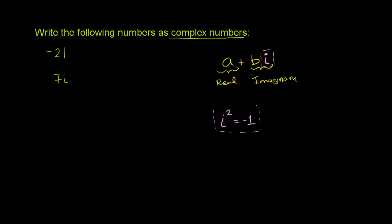So going back to the problem, write the following numbers as complex. So this number right here, this is just a plain vanilla negative 21. It just looks like a real number to me. Well, how do I write it as a complex number? Well, I write it as a combination of a real and an imaginary number. So I could just write this as negative 21, that's the real part,